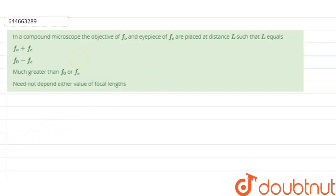Hello students, this question asks that in a compound microscope, the objective is F0 and the eyepiece is Fe. These are placed at a distance L such that L equals 2. So they are saying we have to find the value of L. So L is F0 plus Fe and F0 minus Fe, much greater than F0 or Fe, or they have said that need not depend either value of focal length.